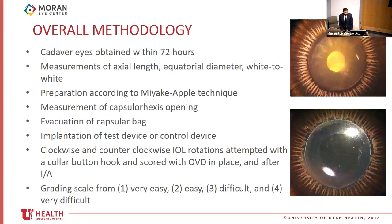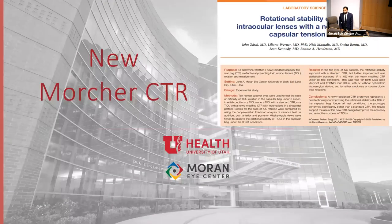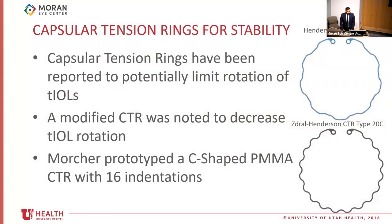The first device is a new Morcher capsular tension ring specifically designed to enhance rotational stability of toric IOLs. The results of this study were already published in JCRS.